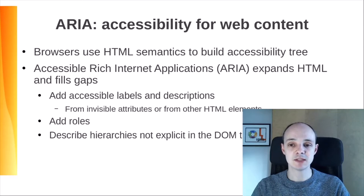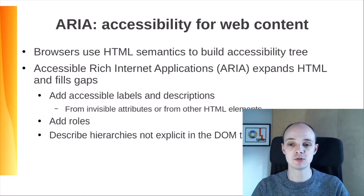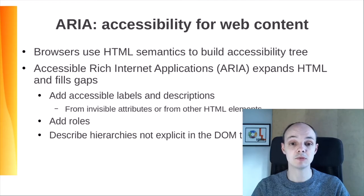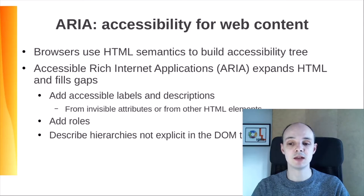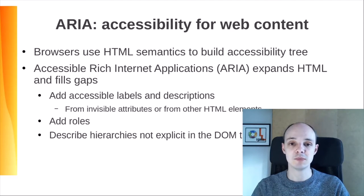Sometimes HTML semantics are not enough, so we have the ARIA standard to expand HTML and fill gaps. It can be used to add accessible labels and descriptions from invisible attributes or from other HTML document elements. Notice that HTML semantics should be used when available, like in the previous example. ARIA can be used to add roles — for example, a piece of text that briefly appears in a web application saying "changes saved." The ARIA alert role can be used to notify ATs about this message and make it be read immediately. It can also be used to describe hierarchies not explicit in the DOM tree, for example, to indicate the correct place in the document hierarchy of a piece of floating text.